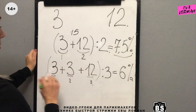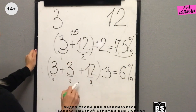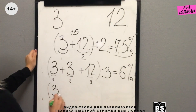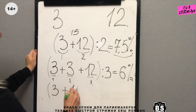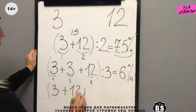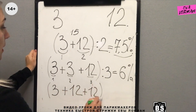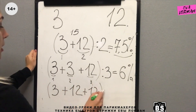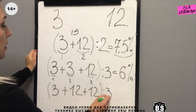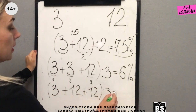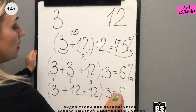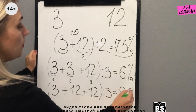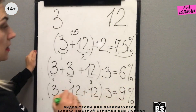Let's change tactics. Take 1 part of 3% plus 2 parts of 12%, divide by 3, and get 9%. Cool.